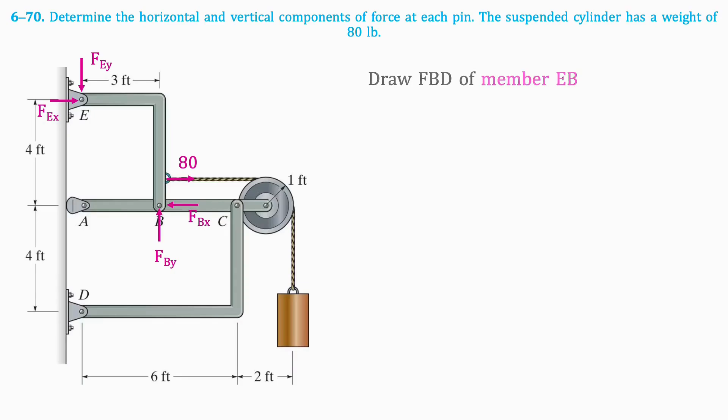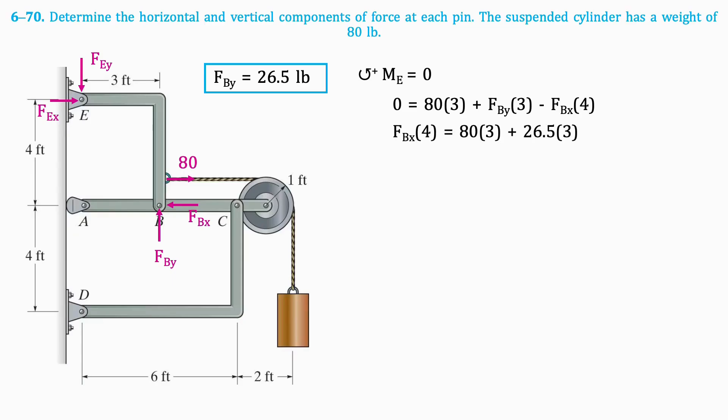Now we'll take the moment about point E. We can set up the following equation, and since we have already found the value for F_BY, we can isolate the equation to solve for F_BX. The result is 80 pounds.